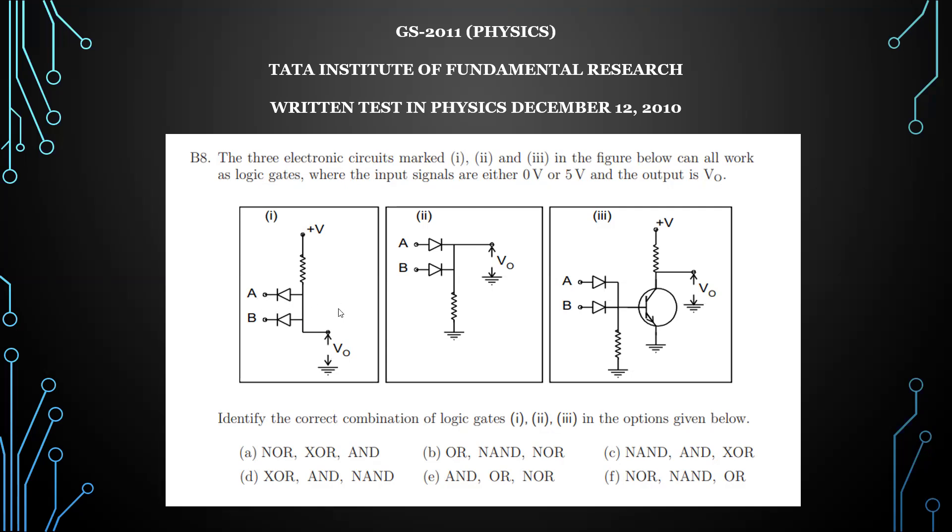Similarly, this is an OR gate. If any one input is high, you will get current and voltage drop. When both are zero, you get zero voltage here. If anyone is high or both are high, you get current and high voltage here. So this is an example of an OR gate.